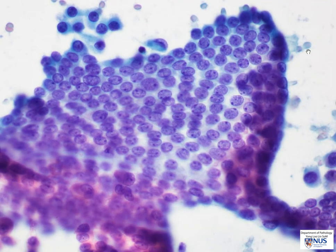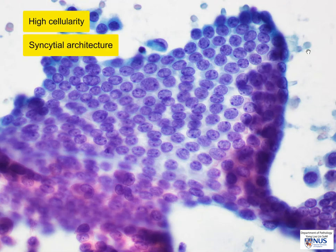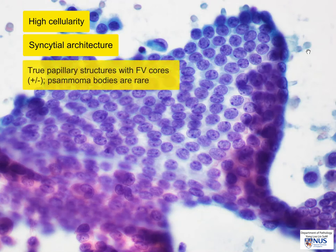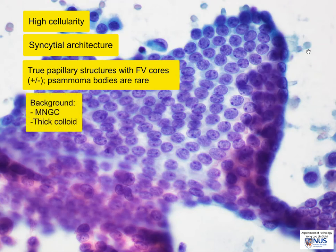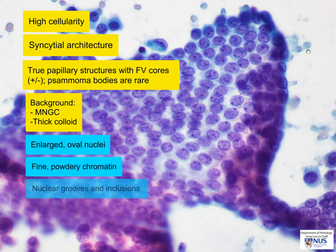In summary, we have looked at the cytologic features of papillary thyroid carcinoma: usually high cellularity; syncytial sheets of abnormal follicular cells with nuclear overlapping and crowding; fibrovascular cores of true papillary structures, which may or may not be present; and in the background, multinucleated giant cells and thick colloid. On high magnification, we have noted nuclear enlargement, oval-shaped nuclei, powdery chromatin, nuclear grooves, and nuclear inclusions.